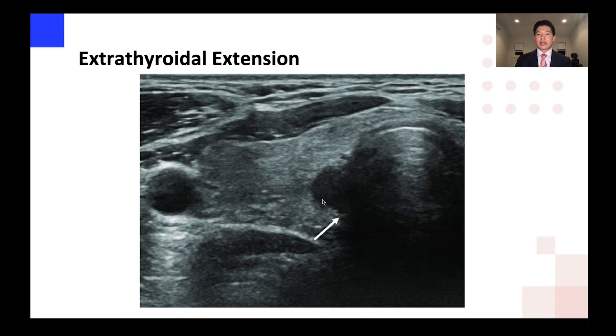On the trachea, instead of seeing a blurred margin, you'll see more of this very wide, flat footprint, and that will suggest the possibility of extrathyroid extension.